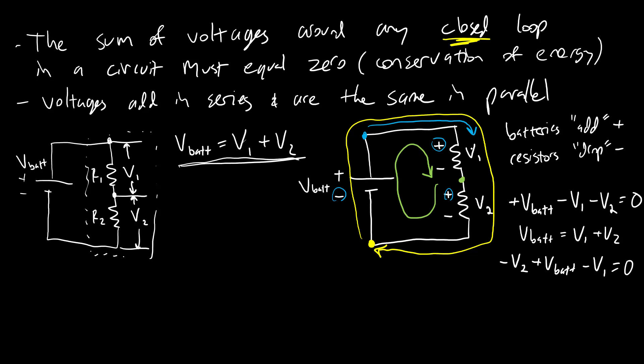Actually, I'll keep this one in blue so it's clear which one I'm referring to. I'm going to have plus V1, keep going, plus V2, then actually subtract the battery voltage minus Vbat equals zero.